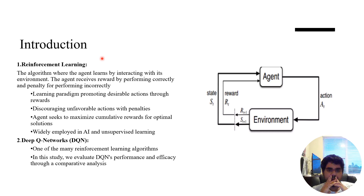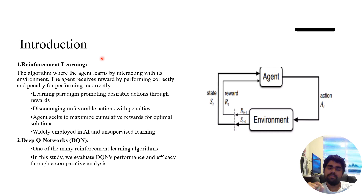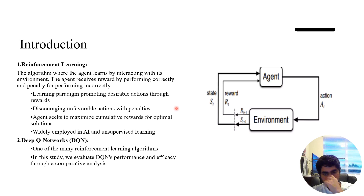Reinforcement learning is a mechanism and algorithm where the agent learns by interacting with the environment. The agent receives a reward if the action proves to be rewarding, and if it is an incorrect move, it is analyzed as the agent learning the paradigm — promoting desirable actions through rewards and discouraging unfavorable actions with penalties. The agent seeks to maximize the cumulative rewards.